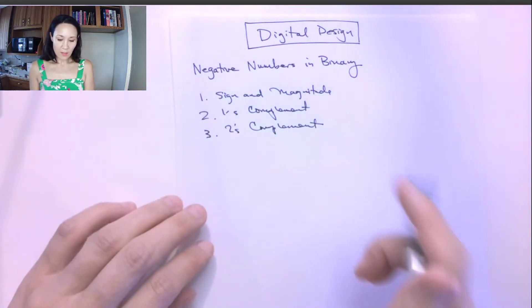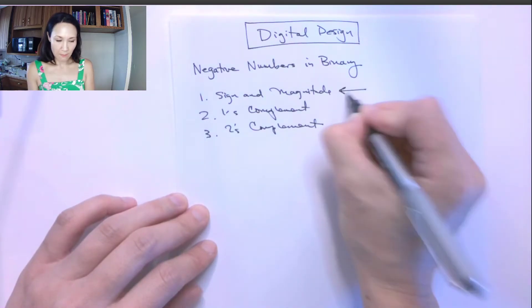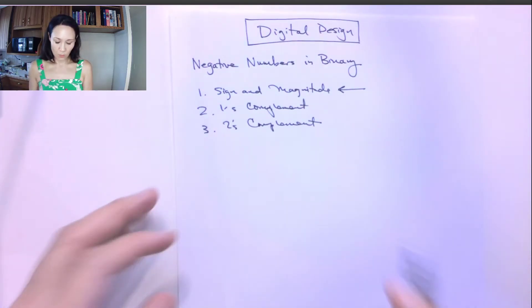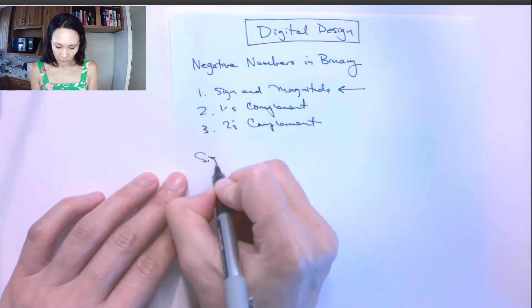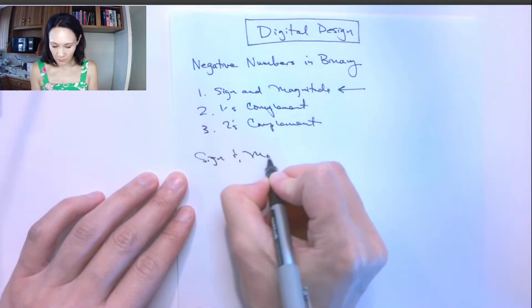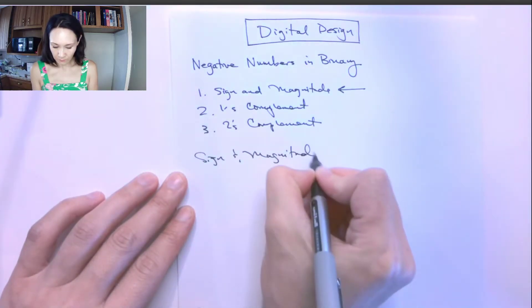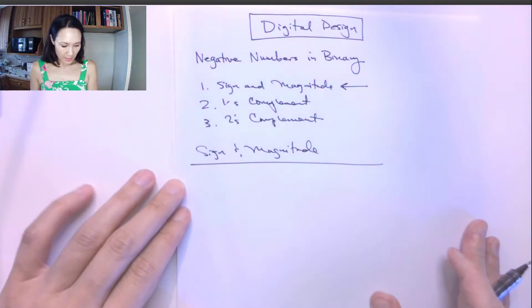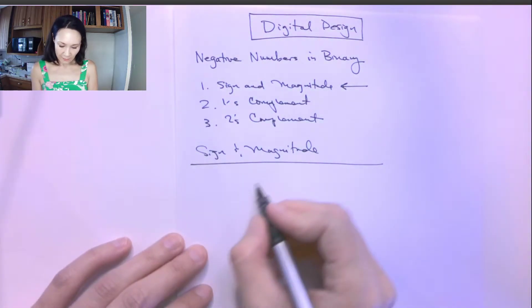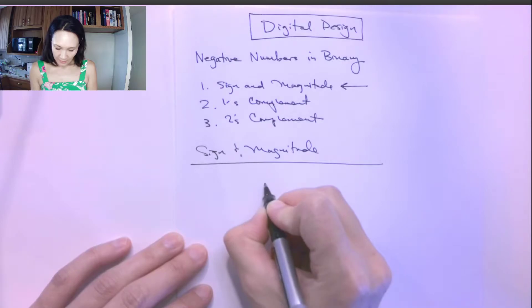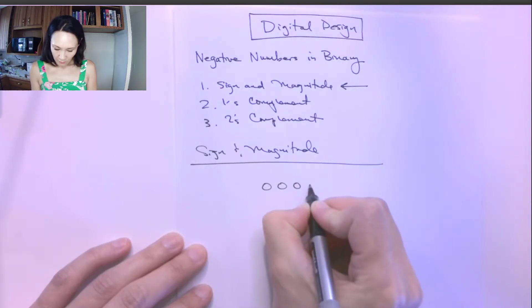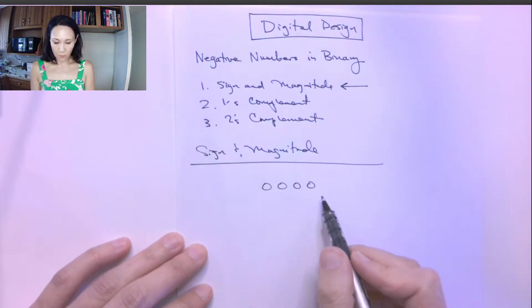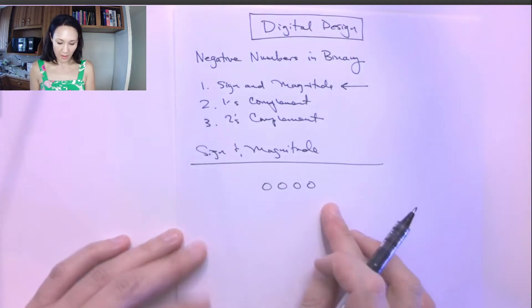So let's first talk about the sign and magnitude convention. The way this works, sign and magnitude, is we have - suppose we have four bits of binary numbers.